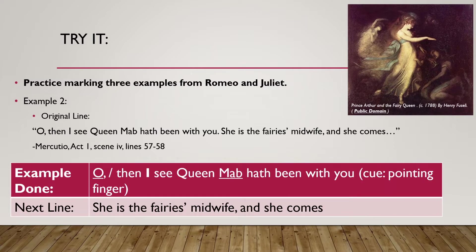Now listen: 'Oh, then I see Queen Mab hath been with you.' Reading it this way emphasizes Queen Mab, a fictional mythical creature of love. The voice inflection shows that Mercutio thinks love is just like a fictional mythical story — a fairy tale. Now see if your markings can support that.